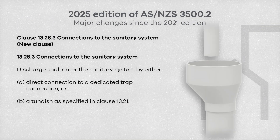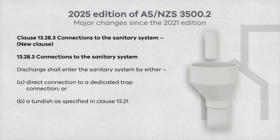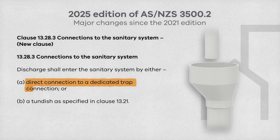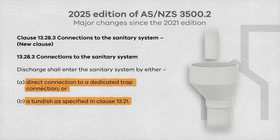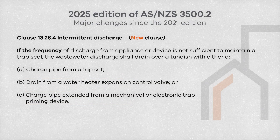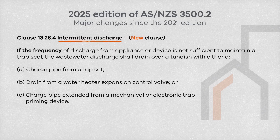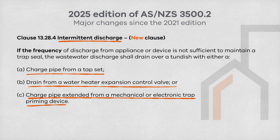The new clause, 'Connections to the Sanitary System,' specifies that discharge must enter the sanitary system either through a direct connection to a dedicated trap or via a tun dish. The clause on 'Intermittent Discharge' has been added to outline three requirements for cases where a device does not discharge frequently enough to maintain a trap seal. These updated requirements are now displayed on screen.